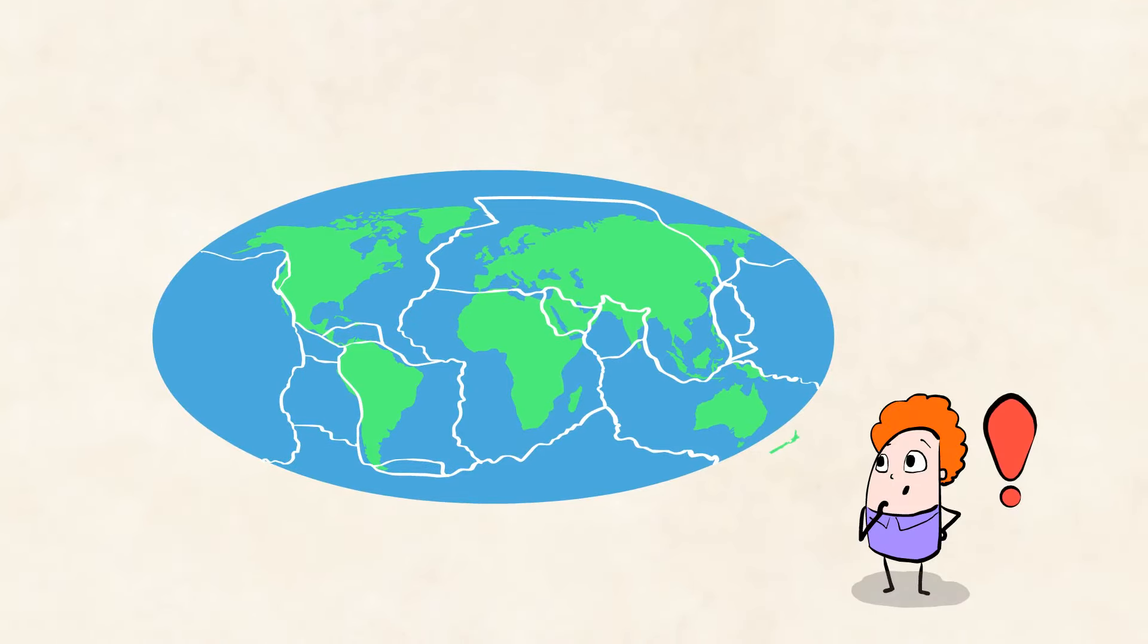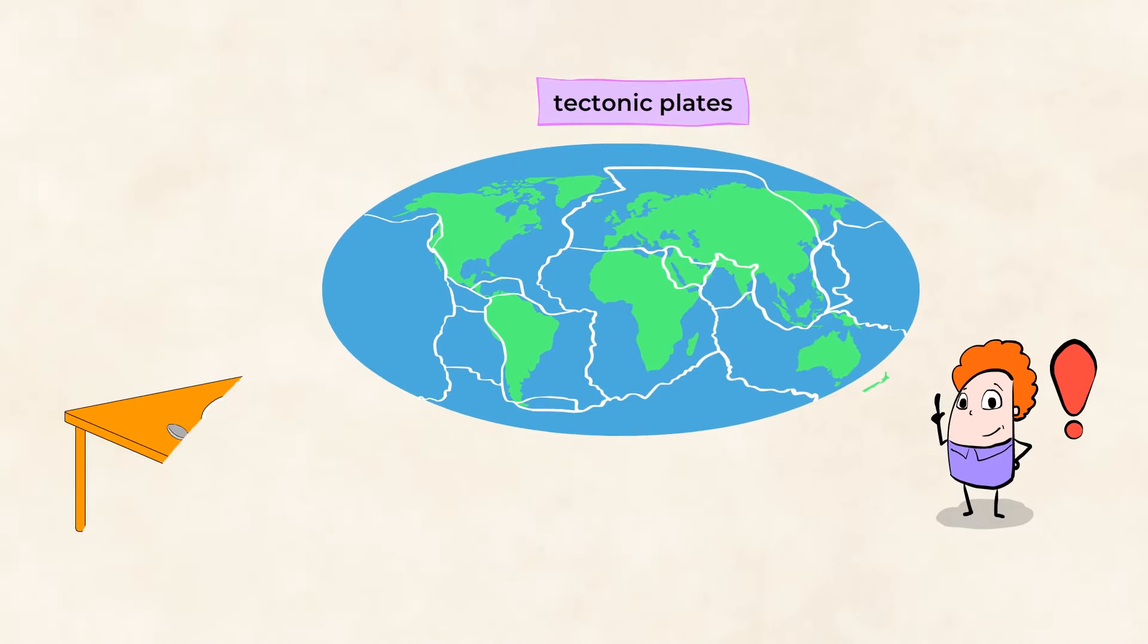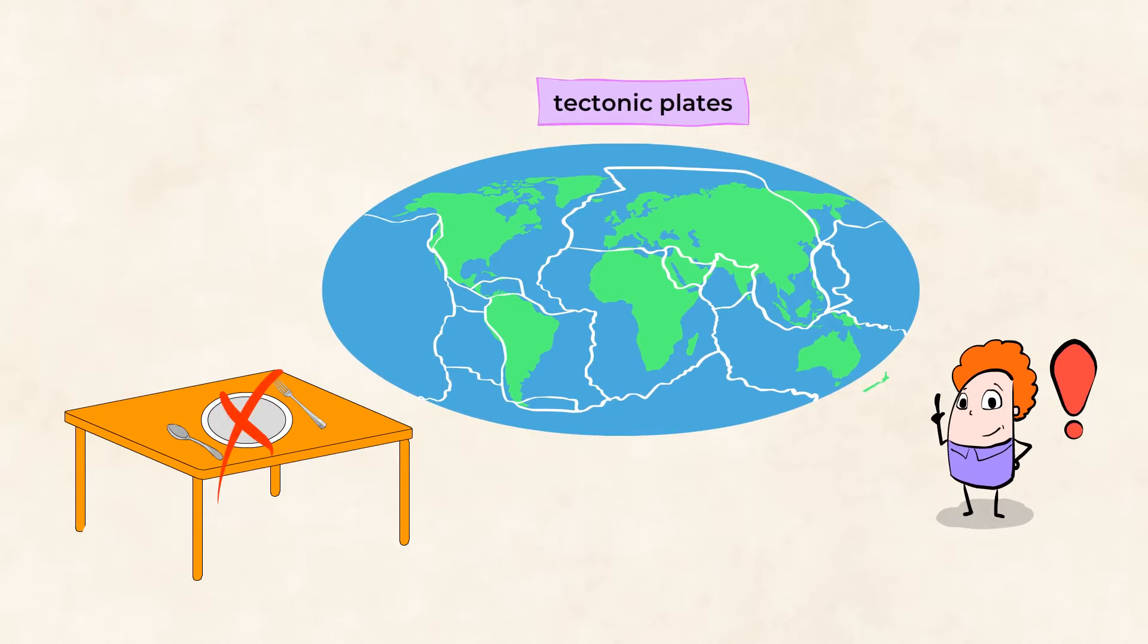Wow! Check out Earth's surface. It's made up of large pieces of land called tectonic plates. Tectonic plates lie below the continents and oceans. These are not plates like you'd find on a dinner table, though, just to be clear.